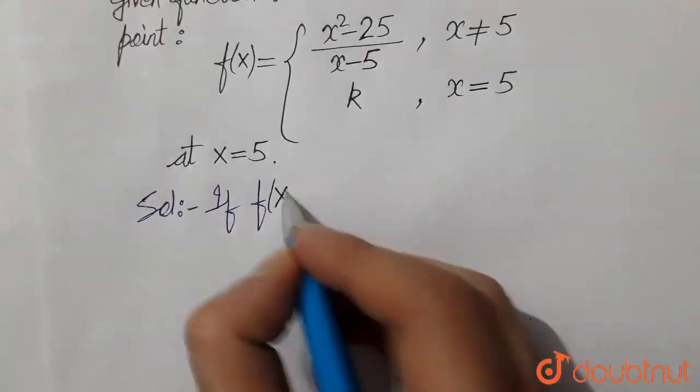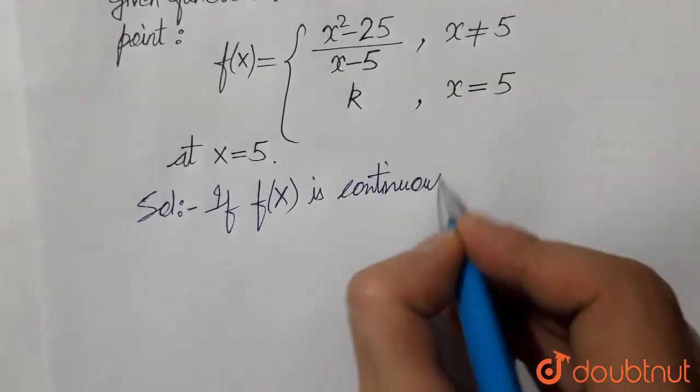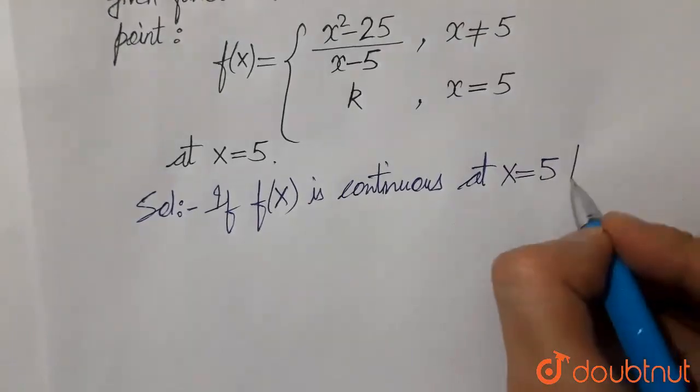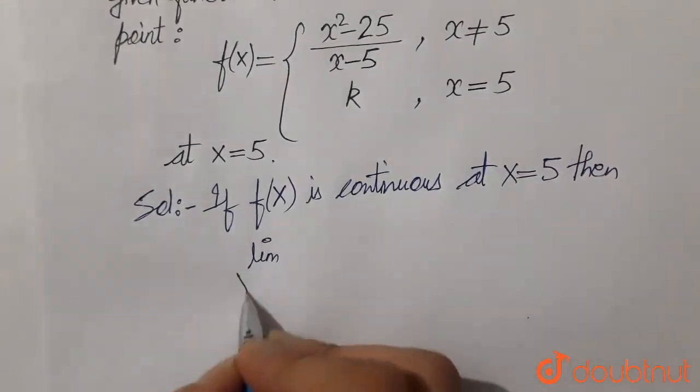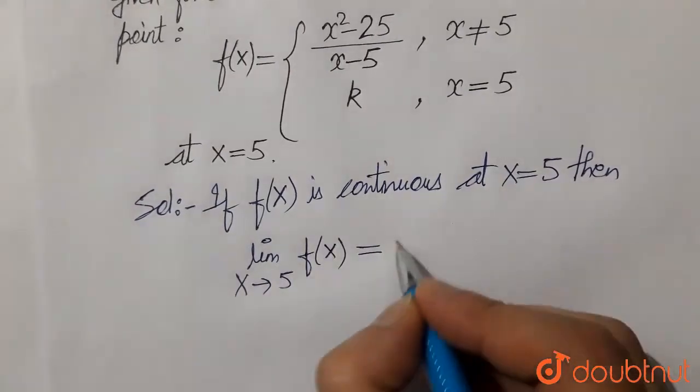If function f(x) is continuous at x equals 5, then the limit as x approaches 5 of f(x) should equal f(5).